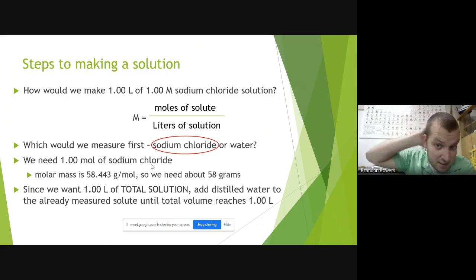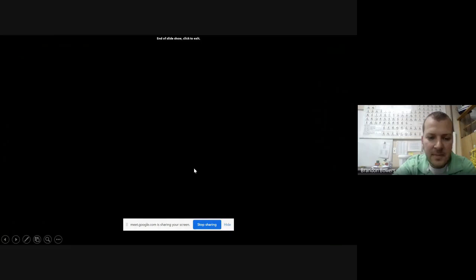How would we make one liter of 1.00 M sodium chloride solution? So first you would have to solve for the amount of moles, and then solve for the amount of grams. And that was 58 grams. So for every one liter, you need 58 grams.